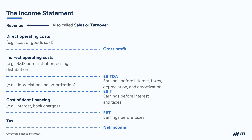Net income can also be called net earnings or net profit. This is the bottom line of the income statement, which then feeds into the retained earnings account on the balance sheet.